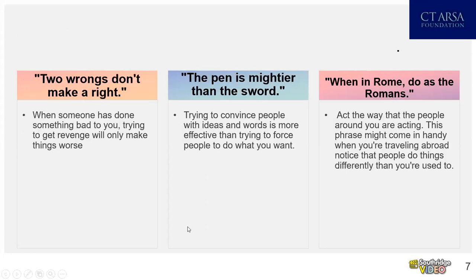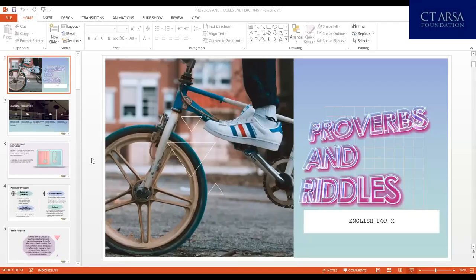The next proverb is 'two wrongs don't make a right.' The meaning is: when someone has done something bad to you, trying to get revenge will only make things worse.